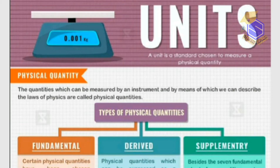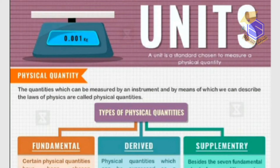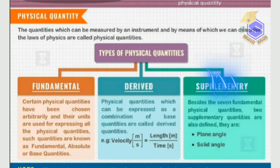What is a unit? A reference standard for measuring a physical quantity is called a unit. What is a physical quantity? In simple words, all quantities which are measurable are called physical quantities. Physical quantities are divided into three types: fundamental physical quantities, derived physical quantities, and supplementary physical quantities. According to these three types, units are also divided into fundamental units, derived units, and supplementary units.